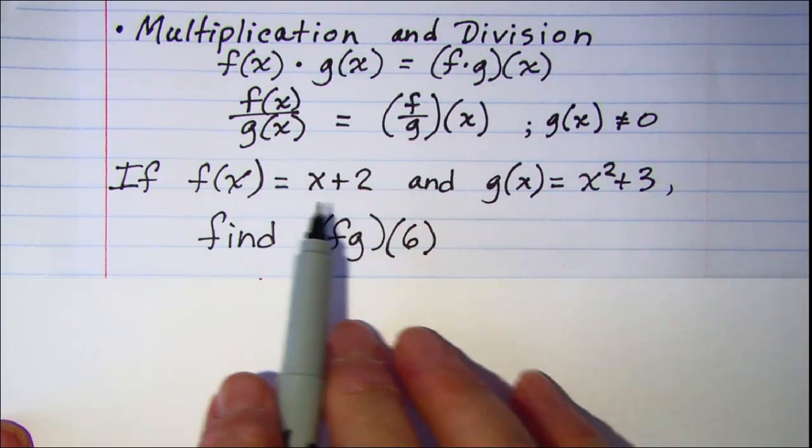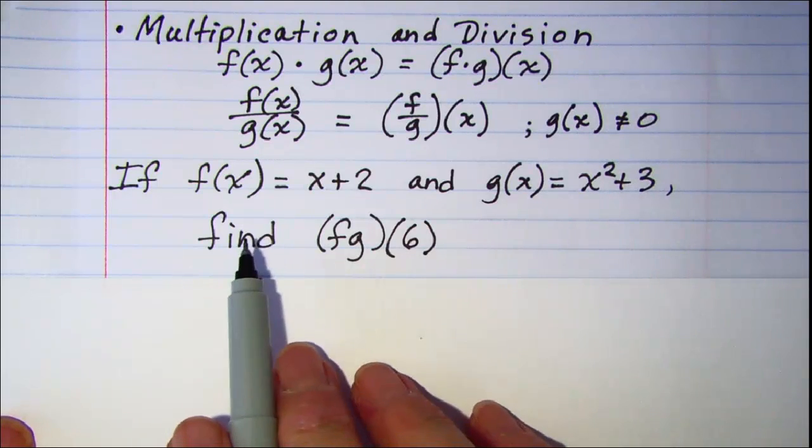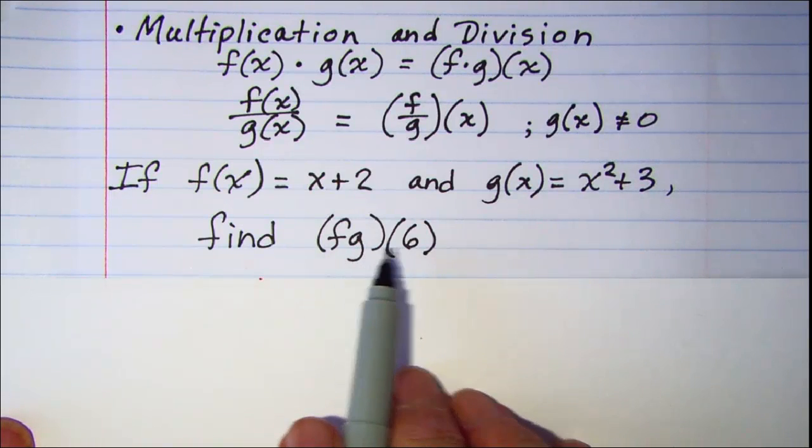If f(x) = x+2 and g(x) = x²+3, find (f·g)(6).